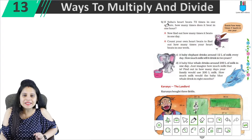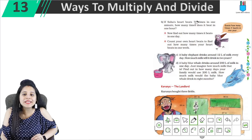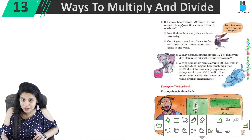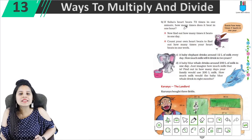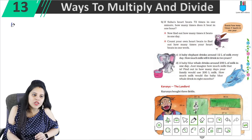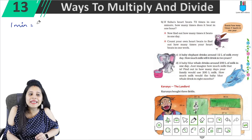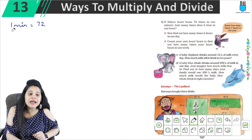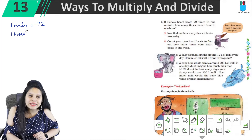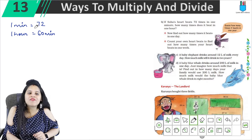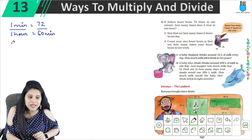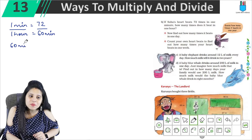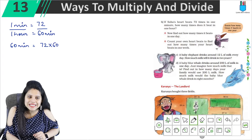On the page we have two parts. If Soha's heart beats 72 times in one minute, how many times does it beat in one hour? We are told that it beats 72 times in one minute, so how many times does it beat in one hour? Since 1 hour equals 60 minutes, it will be 72 into 60.